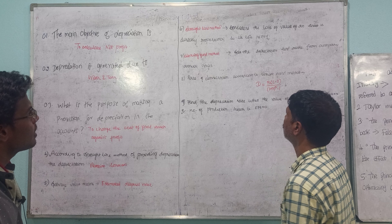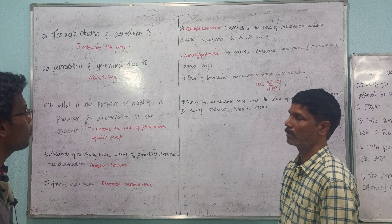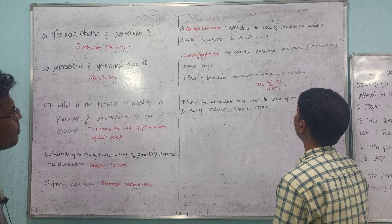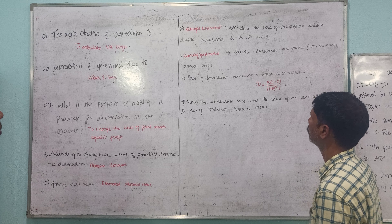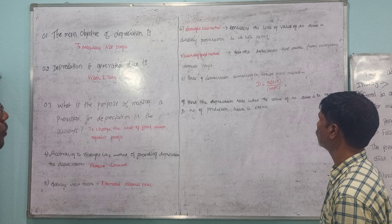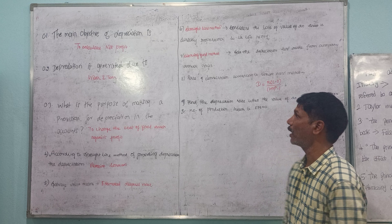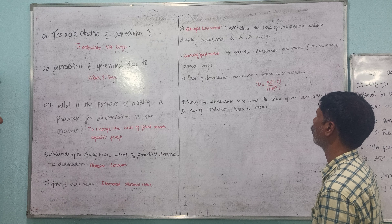Sinking fund method sets the depreciation fund aside from company assets. The rate of depreciation according to the sinking fund method is: D equals R into (C minus S) divided by (1 plus R to the power n, minus 1). That means D = R(C − S) / ((1 + R)^n − 1).